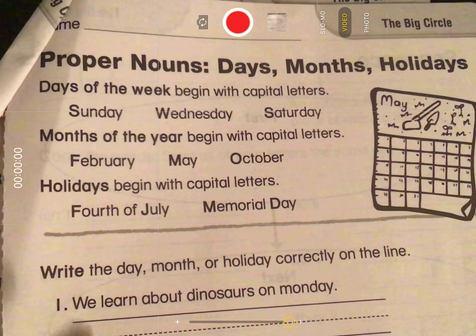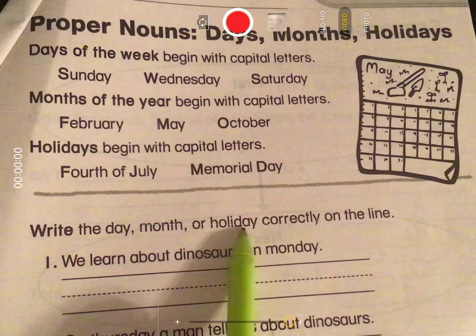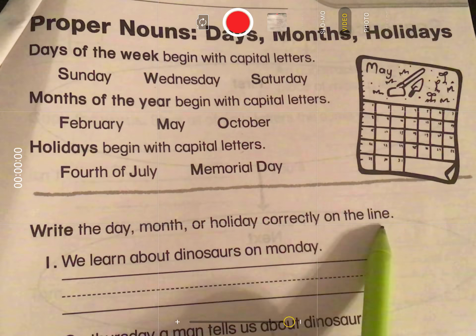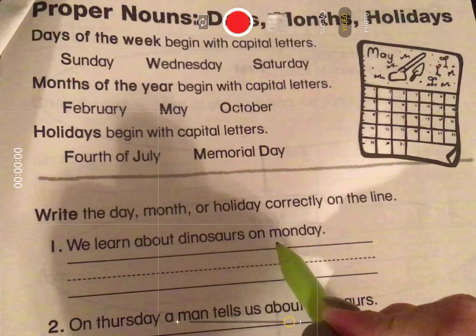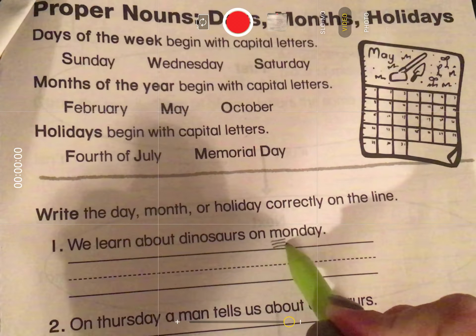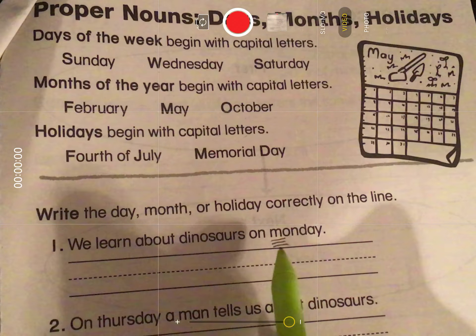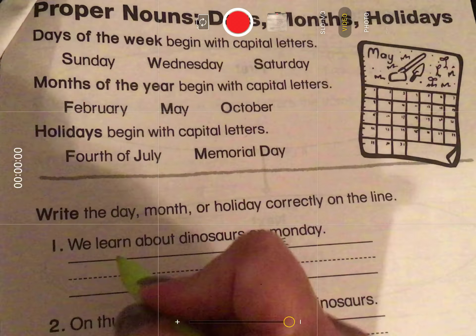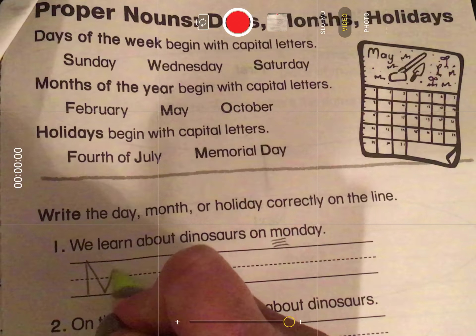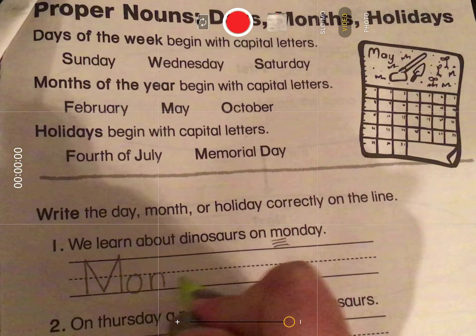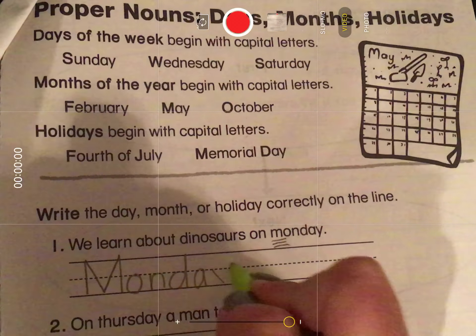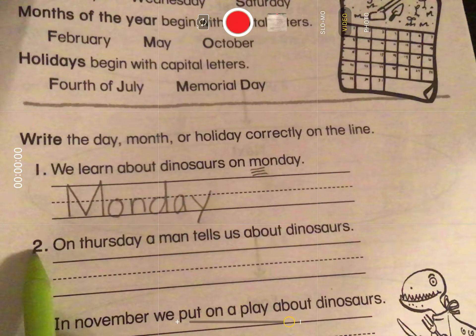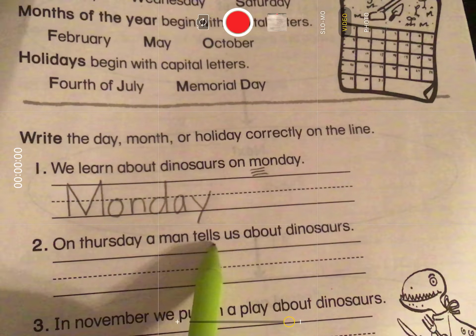Down here we're going to write the day, month, or holiday correctly on the line. 'We learn about dinosaurs on Monday.' Where's the proper noun in that sentence? It is Monday. So we're going to say 'make me big' and write that word on the line the way it should be — with an uppercase M for Monday.